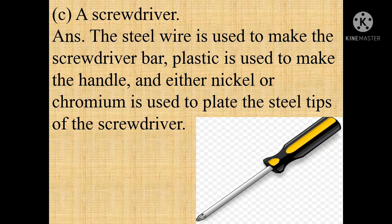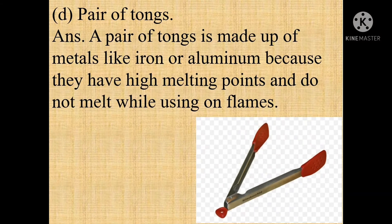Plastic is used to make the handle, and either nickel or chromium is used to plate the steel tips of the screwdriver. D) Pair of tongs. Answer: A pair of tongs is made up of metals like iron or aluminum because they have high melting points and do not melt while using on flames.